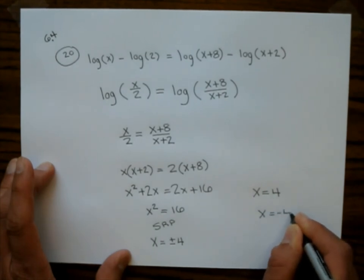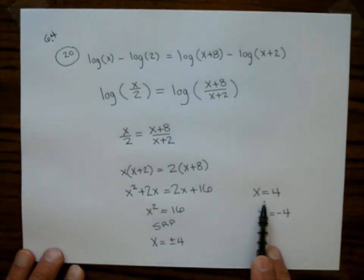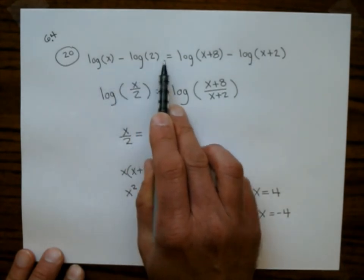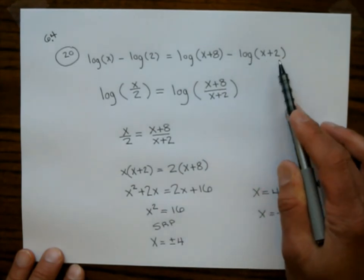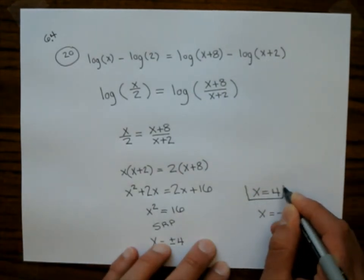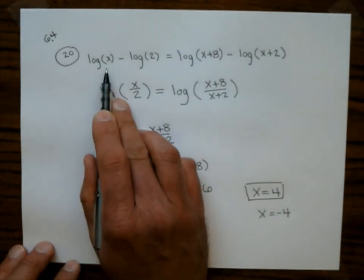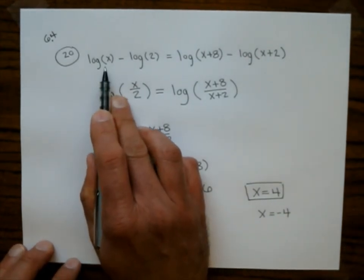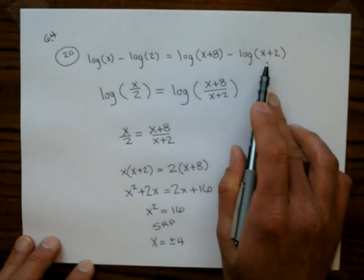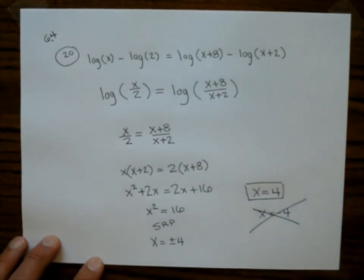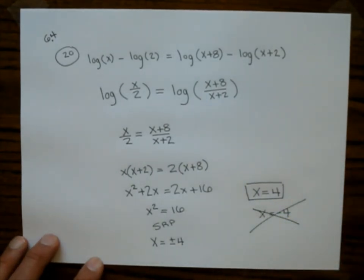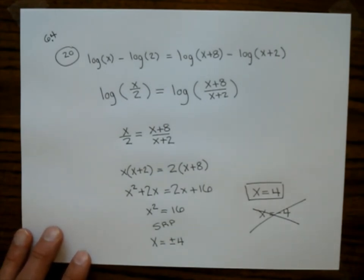The 2x terms cancel from both sides, leaving x squared equals 16. Using the square root property: x equals plus or minus 4. Checking for extraneous solutions: x equals 4 gives positive arguments everywhere — it's valid. x equals negative 4 gives a negative argument in the first log — that's a terrorist. The only answer is x equals 4. Note: sometimes you keep both solutions, sometimes you discard all of them.